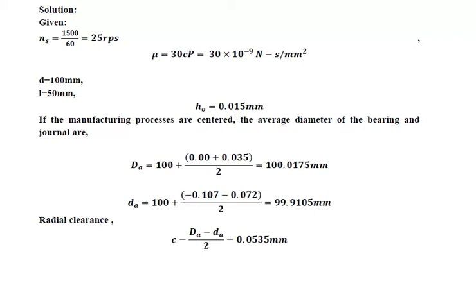In the given data, Ns in RPS is needed for the calculation. So Ns = 1500 divided by 60 = 25 RPS. The viscosity of lubricant mu is 30 centipoise; converting to Newton-second per mm squared: 30 centipoise = 30 × 10⁻⁹ N·s/mm².